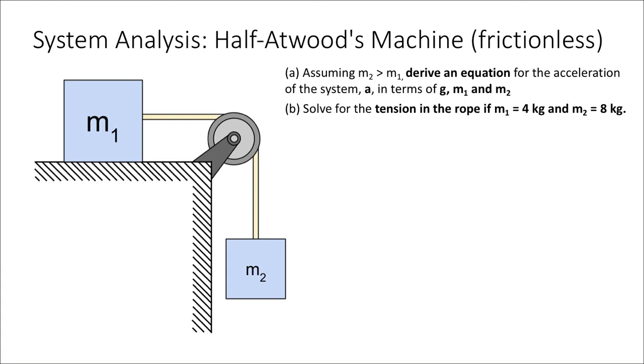In this problem we're given what's called a half Atwood's machine. In other words, half of the system, the block m2, is hanging off the end of a table and block m1 is resting on a table. Let's derive an equation for the acceleration of the system in terms of g, m1, and m2, assuming that m2 is greater than m1 and that m2 is falling or accelerating down towards the ground.